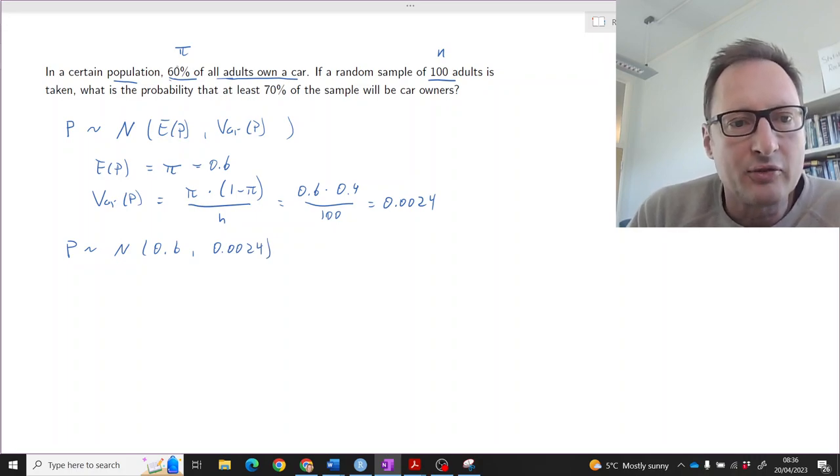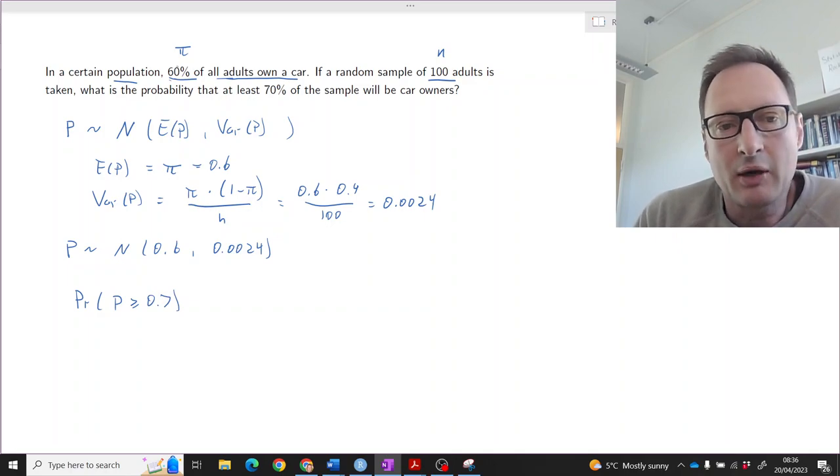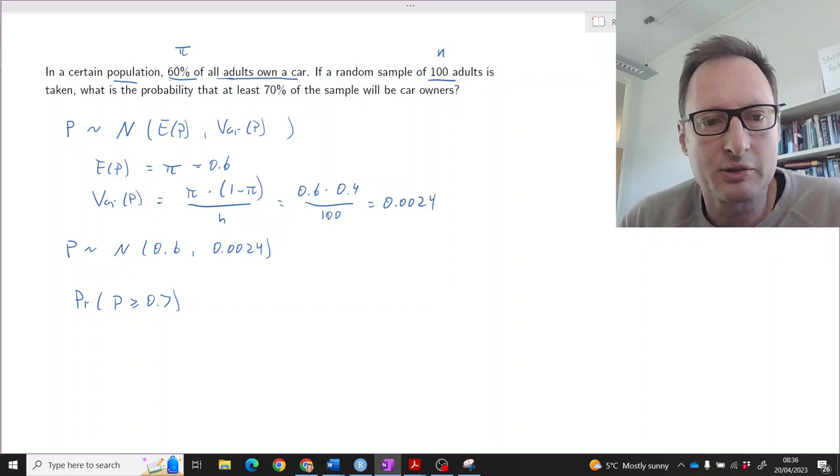So what we know now is the sampling distribution of our sample proportion is normal with mean 0.6 and variance 0.0024. So we know how p-hat is distributed, normally distributed like this. And now we are asking the question, what is the probability that p-hat is larger or equal to 70%? But this is from now on just a question where we have to deal with a normal distribution.